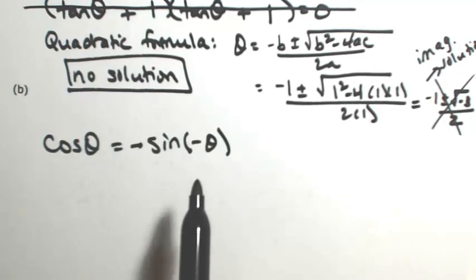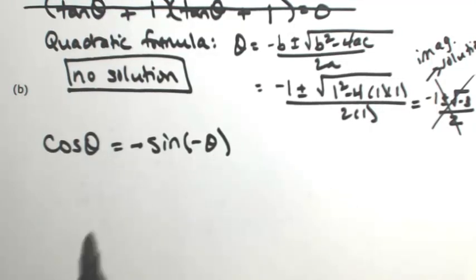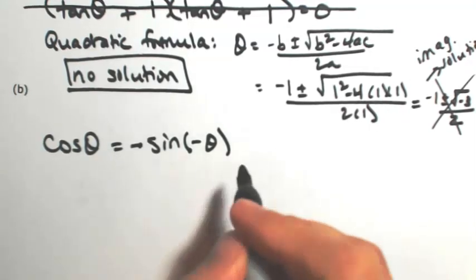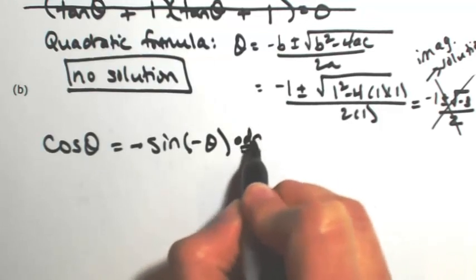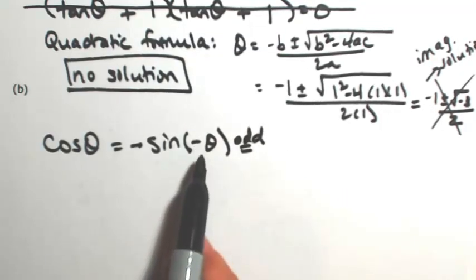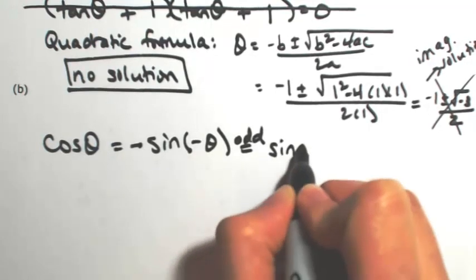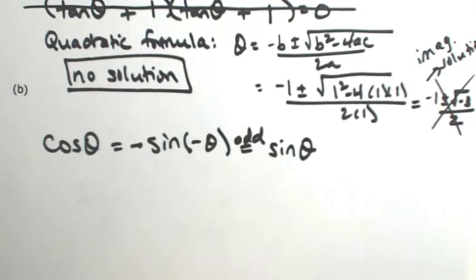Something that comes to my mind as soon as I see a negative on an angle is the idea of even and odd functions. So recalling that the sine function is an odd function, that negative is just going to spit back out and then multiply by that other negative.